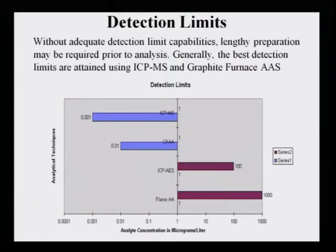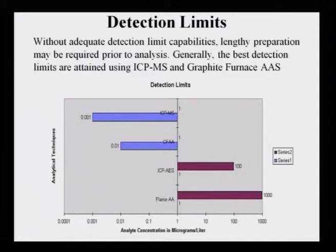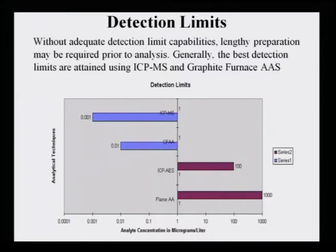Generally, the best detection limits are attained using ICP-MS and graphite furnace AAS. GFAA and ICP-MS can go up to 0.01 and 0.001 respectively in limits of detection, whereas for less sensitive and more routine analysis, flame AAS and ICP-AES are good enough. That is why there is available information on what to use and when to use it.